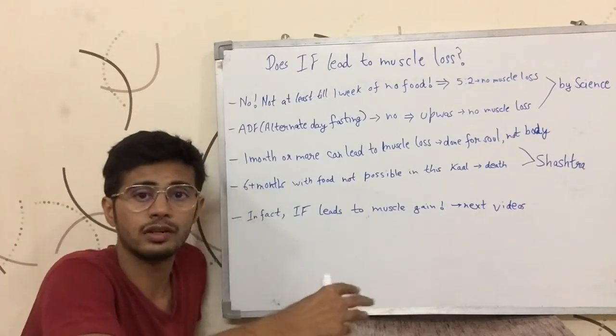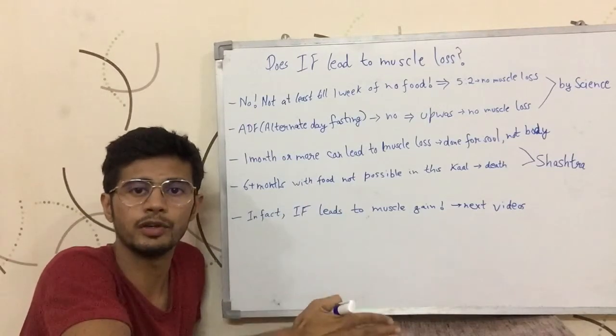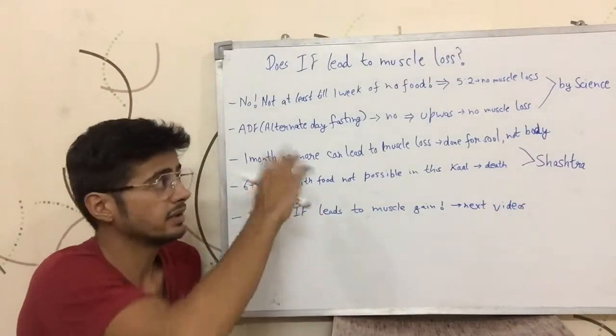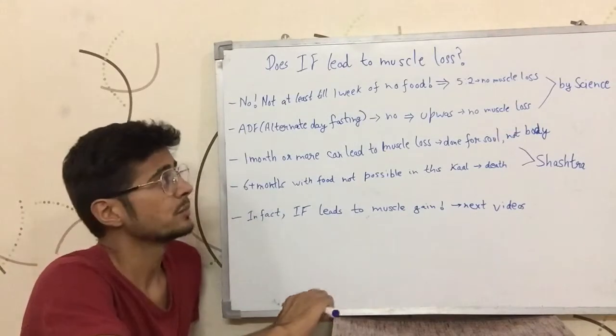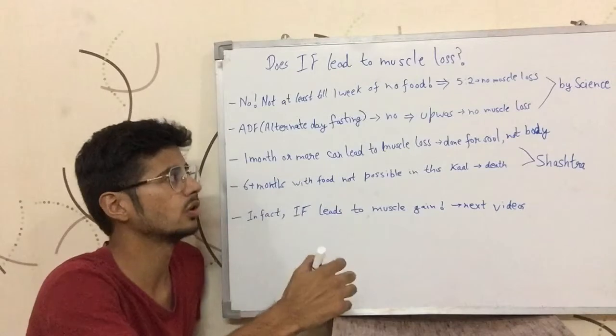In alternate day fasting you are kind of hungry for 7 days in 2 weeks, kind of 3.5 days in 1 week. And it is not causing muscle loss. So how would staying hungry for 1 or 2 days in a week cause muscle loss?